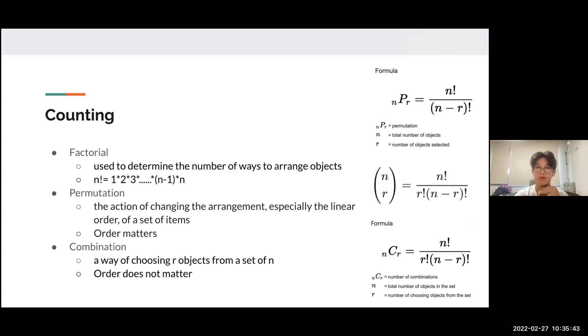nPr, this notation indicates the permutation value. N is the total number of objects. In my example, N would be five chairs. R indicates the number of objects selected. In my example, three people would be the number of objects selected.